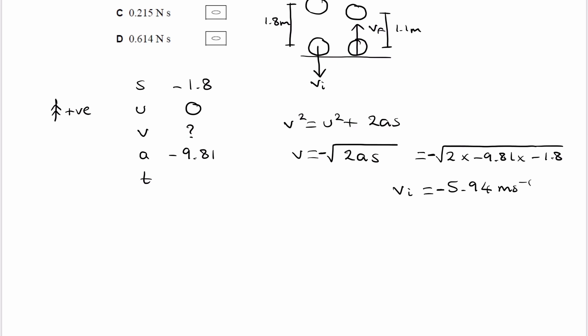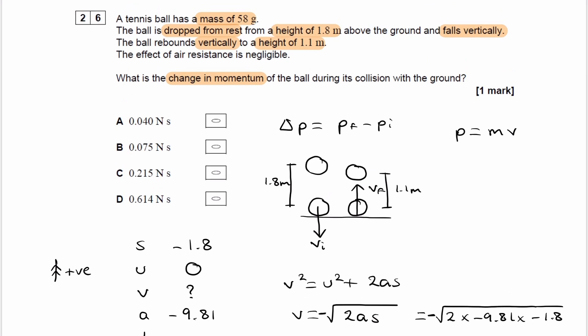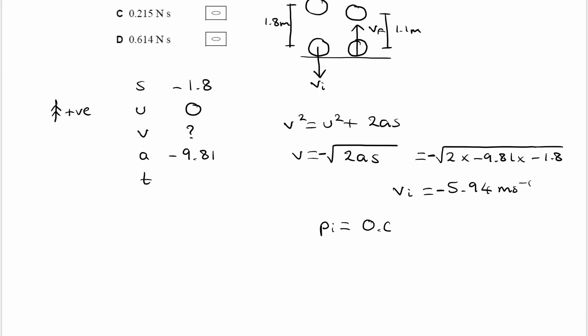And now we can work out what the momentum would be. So momentum is mass times velocity. We know that the mass was 58 grams. So convert that to kilograms, 0.058. Multiply it by the velocity, minus 5.94, and this gives us negative 0.345 Newton seconds. So we have the initial momentum. Now we need to work out the final momentum.